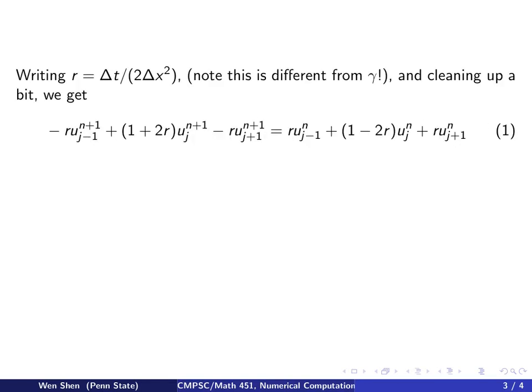Now let's introduce a notation. If we multiply that scheme by delta T on both sides, we see that this constant here, delta T over 2 times delta X squared, would appear on every term on the right-hand side. So we just call this a number. Let's call it R. That would be a constant.